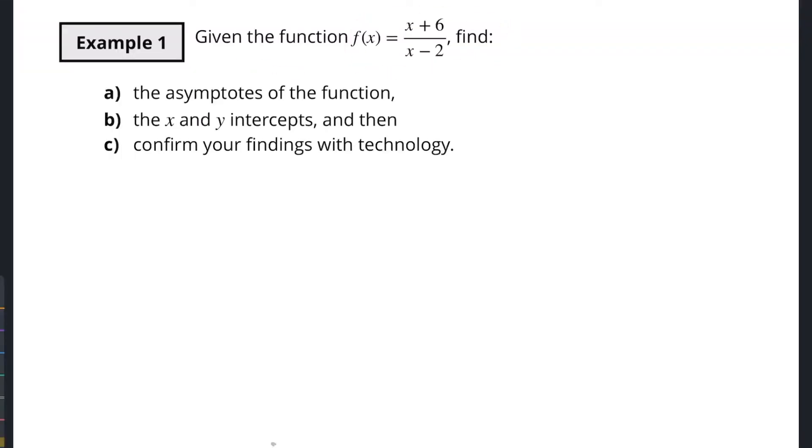In this video we're going to continue our conversation on rational functions. We're going to look at how to find the vertical and horizontal asymptotes, find the x and y intercepts, and then confirm our findings with a calculator or graph. Given the function f(x) = (x + 6) / (x - 2), find the asymptotes, find the intercepts, and confirm our findings with a graph.